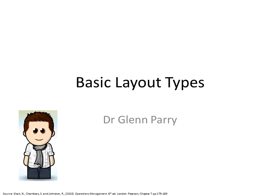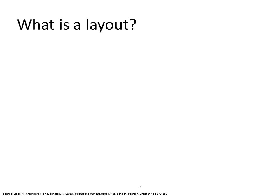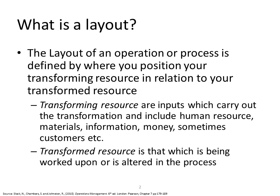We're going to talk about basic layout types. The layout of an operation is defined by where you position your transforming resource in relation to your transformed resource. Transforming resources are those things which carry out an action or transformation — that's your people, your materials, your information. The transformed resource is that which you're working upon, the thing that you're trying to alter, or the resources that are altered in your process.